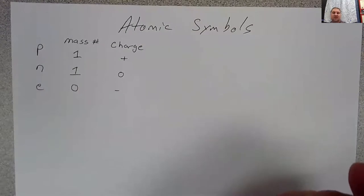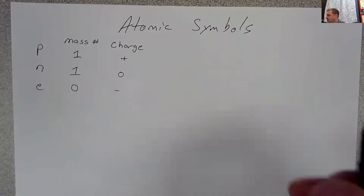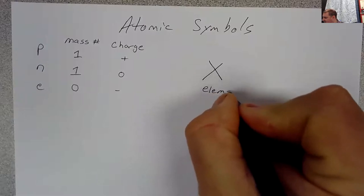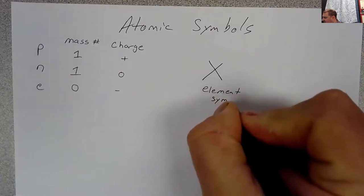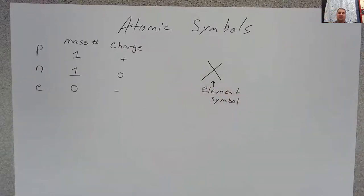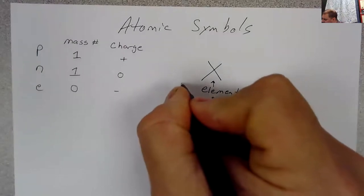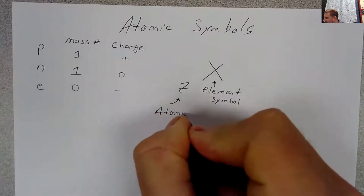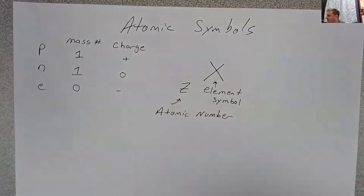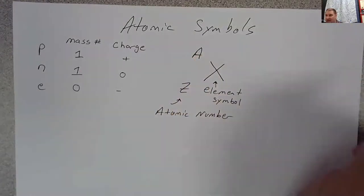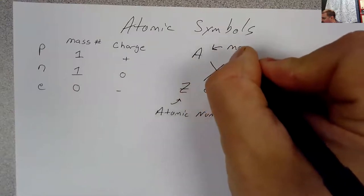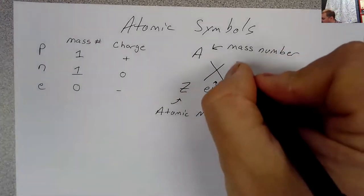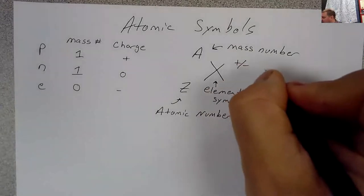We can use this information to put together what we call atomic symbols. In an atomic symbol we have the symbol of the element — we're using X here to represent that. Down here we have Z, which is going to be the atomic number. And up here on the atomic symbol will be A, which is going to be the mass number of the atom.